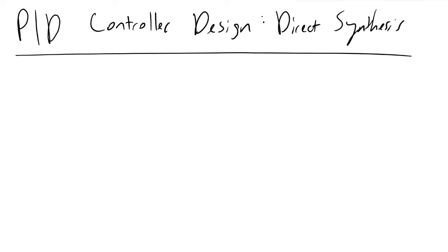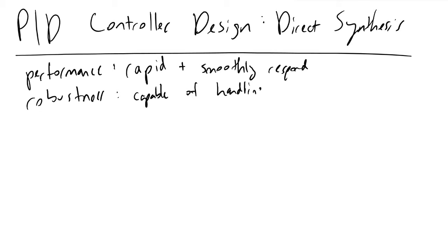And so the two key words here are performance, which tells us how rapid and smooth we are able to respond to perturbations such as step changes, and robustness. Robustness tells us how capable our controller is of handling inaccuracies.